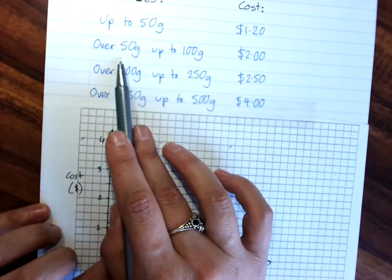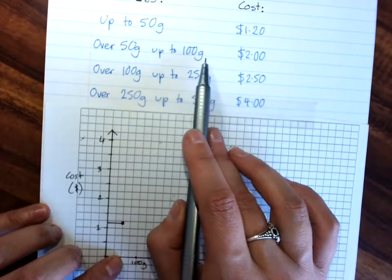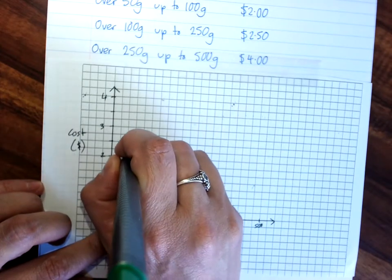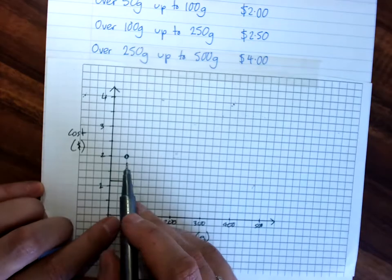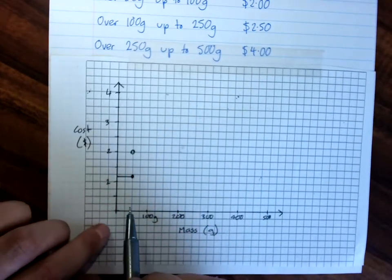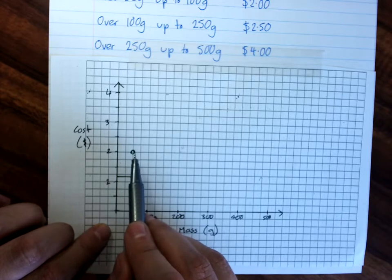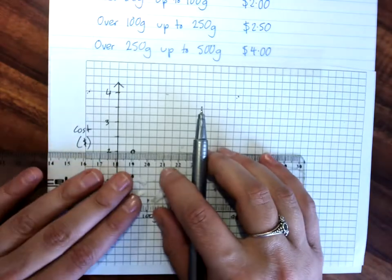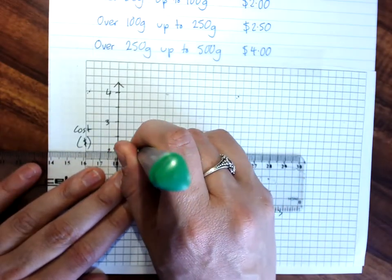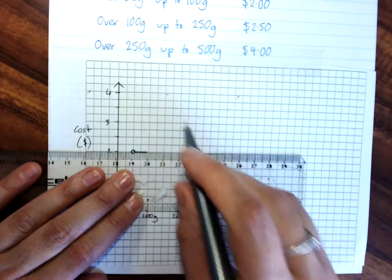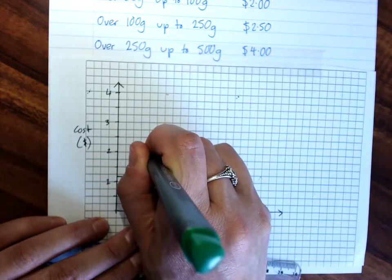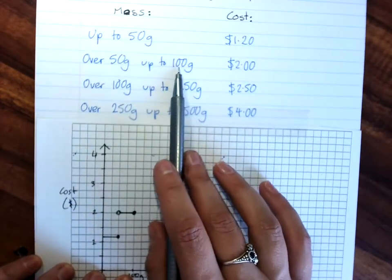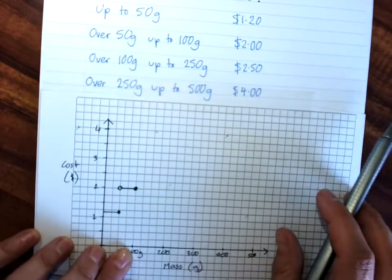When I start my over 50 grams, up to 100 grams, which is at $2, I'm going to start here at $2 with an open circle to show that 50 grams is not included in this $2. So, 50 grams, up to 100 grams, and my 100 grams will be colored in as the end point, because 100 grams is included in this $2 option.